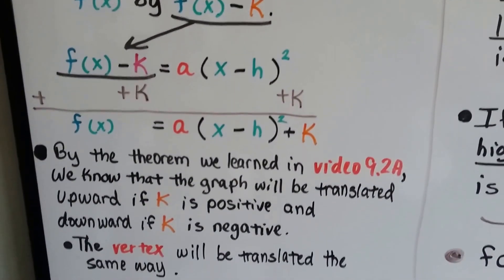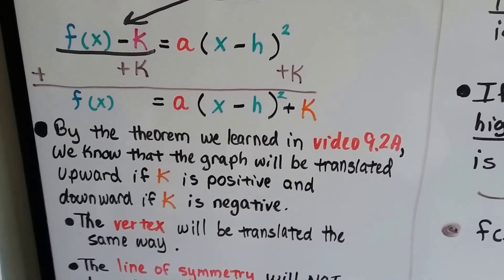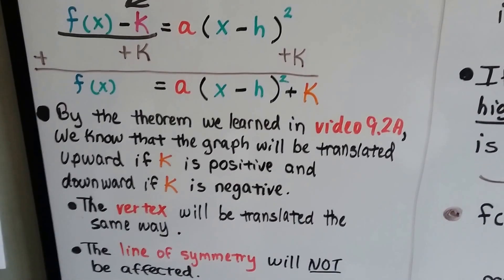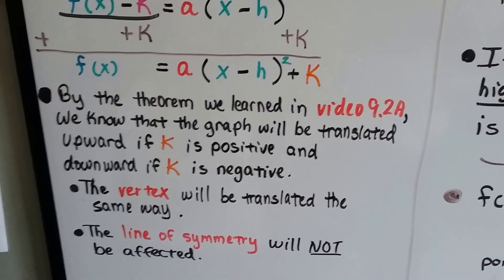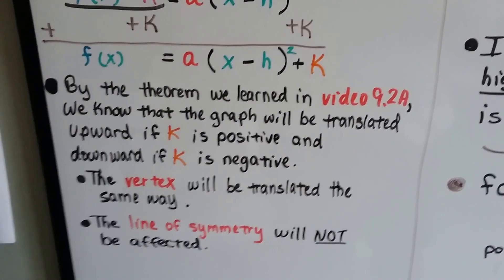By the theorem we learned in video 9.2a, there's a link to that video in this description, we know that the graph will be translated upward if k is positive and downward if k is negative. And the vertex will be translated the same way, and the line of symmetry will not be affected.